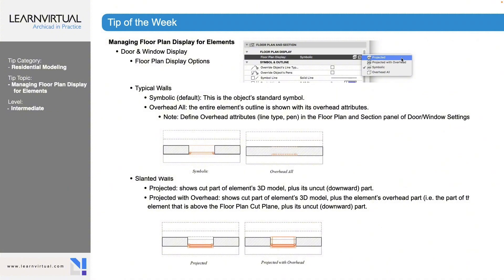We also have the ability to use and set these settings to interact with the floor plan cut plane settings, which you can open from the Document menu under Floor Plan Cut Plane. There you can set the cut plane settings for different options: the height, the story relative to the floor plan range, and the absolute display limit.